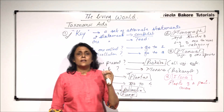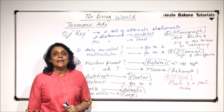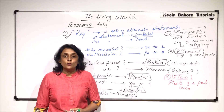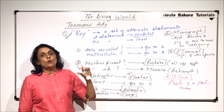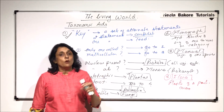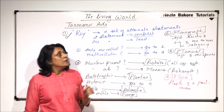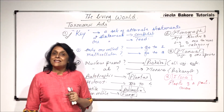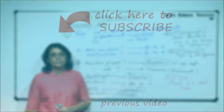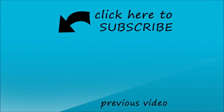So these are various taxonomic aids which help us in the study. In this chapter — the first basic chapter of the unit — we learned how to organize organisms in various categories and identify the structures that help us in study. From the next part, we will take up the next chapter of this unit. Thank you.